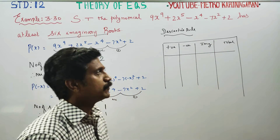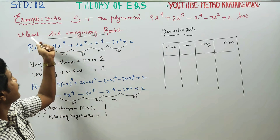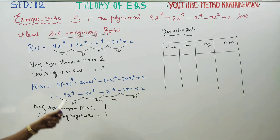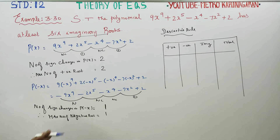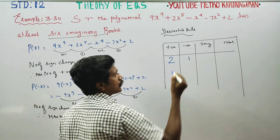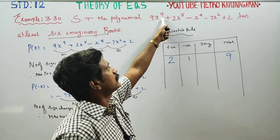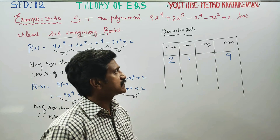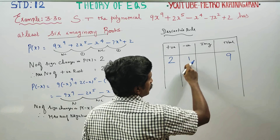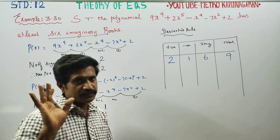Let's discuss a little deeper the meaning of 'at least.' The maximum number of positive roots is 2, and the maximum number of negative roots is 1. By the fundamental theorem, the total number of roots is 9. Two plus one is three, so the imaginary roots are 9 minus 3 equals 6. At least six imaginary roots.